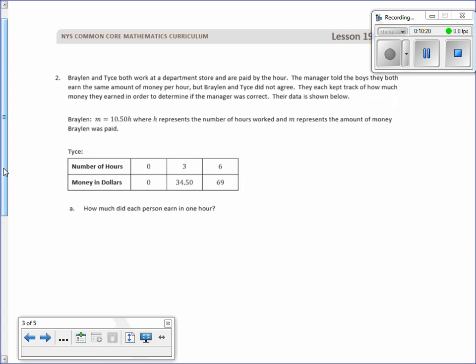Number 2. Braylon and Tice both work at a department store and are paid by the hour. The manager told the boys they both earn the same amount of money per hour. But Braylon and Tice don't agree. They each keep track of how much money they earned in order to determine if the manager was correct. The data is shown below. So now we have Braylon who has given us an equation. M, money, equals $10.50 times hour. How much money he makes. He makes $10.50 an hour. I'd rather see like a P for paycheck or something. He's making $10.50 an hour. It tells us right there, K equals $10.50. Because we have an equation, Y equals KX. And in this case they call it Y M, K $10.50, and X is H.